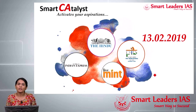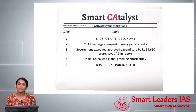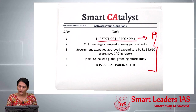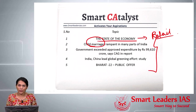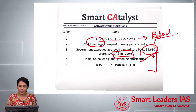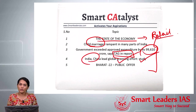Hello friends, welcome to Smart Catalyst. Today we will be seeing the current affairs of 13 February 2019. The articles we will be seeing for prelims are these five: the first one talks about the state of the economy and fall in retail inflation; the second about child marriages; the third about the CAG report on exceeded expenditure; the fourth about NASA's study on India and China's greening effort; and the final one about Bharat 22, India's exchange traded fund.